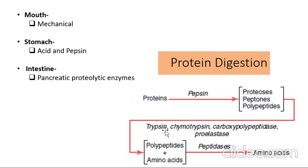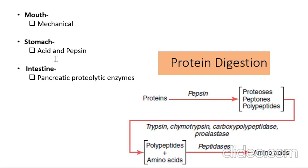During protein digestion, proteins are broken down from large polypeptides to smaller polypeptides and then into amino acids. In the mouth, only mechanical digestion occurs as there is no proteolytic enzyme in saliva. In the stomach, acid and pepsin are present. Acid first activates pepsin, which is the most important proteolytic enzyme, and converts proteins into large polypeptides.